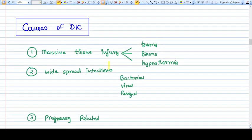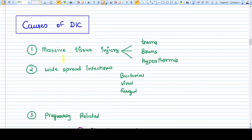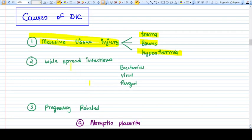What are the causes of DIC? Wherever there is massive tissue injury like in trauma, burns, hyperthermia, DIC can happen. If there are widespread infections like toxic shock syndrome, bacterial, viral, or fungal diseases, you might get DIC.